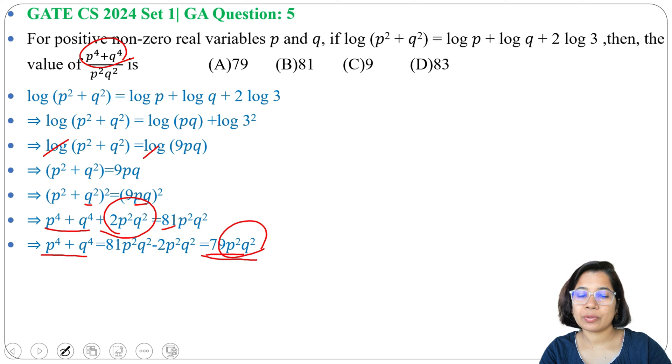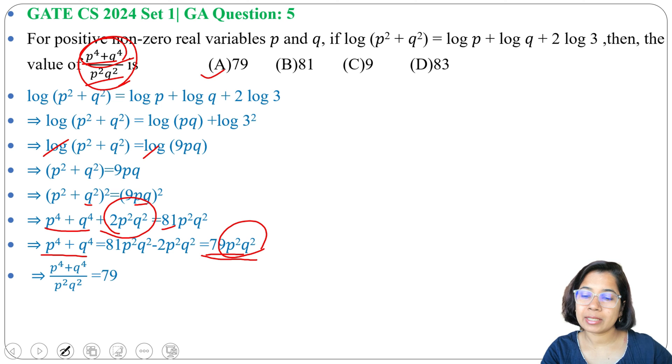We can take this p²q² to left side. So (p⁴ + q⁴)/(p²q²) = 79. That is exactly what is asking in the question: (p⁴ + q⁴)/(p²q²). And in option A, 79 is given. So answer will be option A, 79.